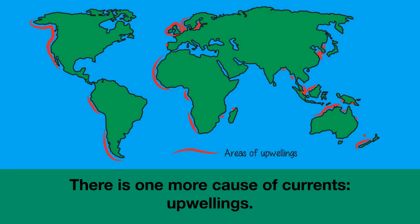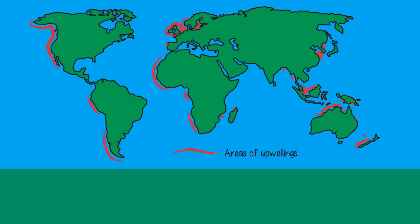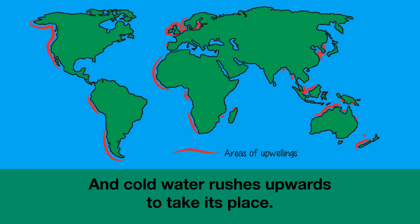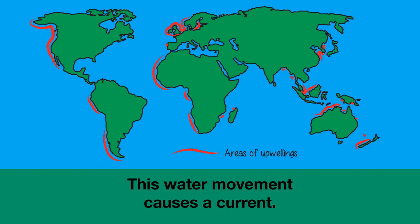There is one more cause of currents, and that is upwellings. An upwelling happens when winds push warm surface water away from the shore, and cold water from the ocean depths rushes upwards to take its place. This water movement causes a current.